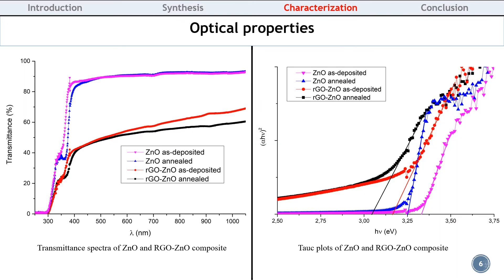No significant change in the transmittance value in the visible range was observed with the annealing treatment. However, a red shift of the absorption edge was observed for ZNO and RGO ZNO composites with the annealing treatment. The transmittance of RGO ZNO composite showed a large decrease in the visible range compared to ZNO.